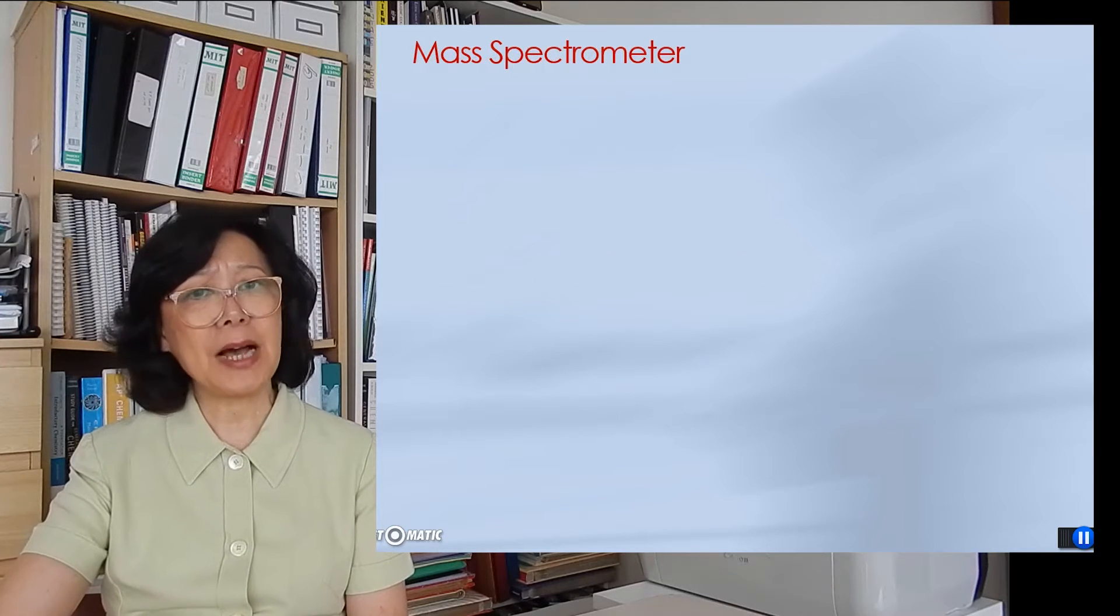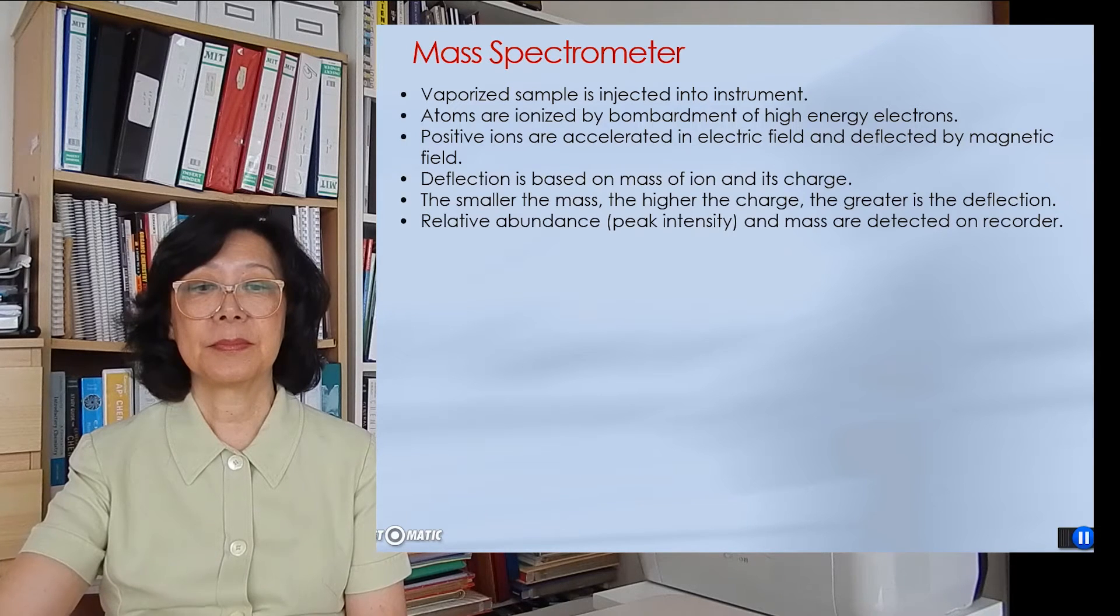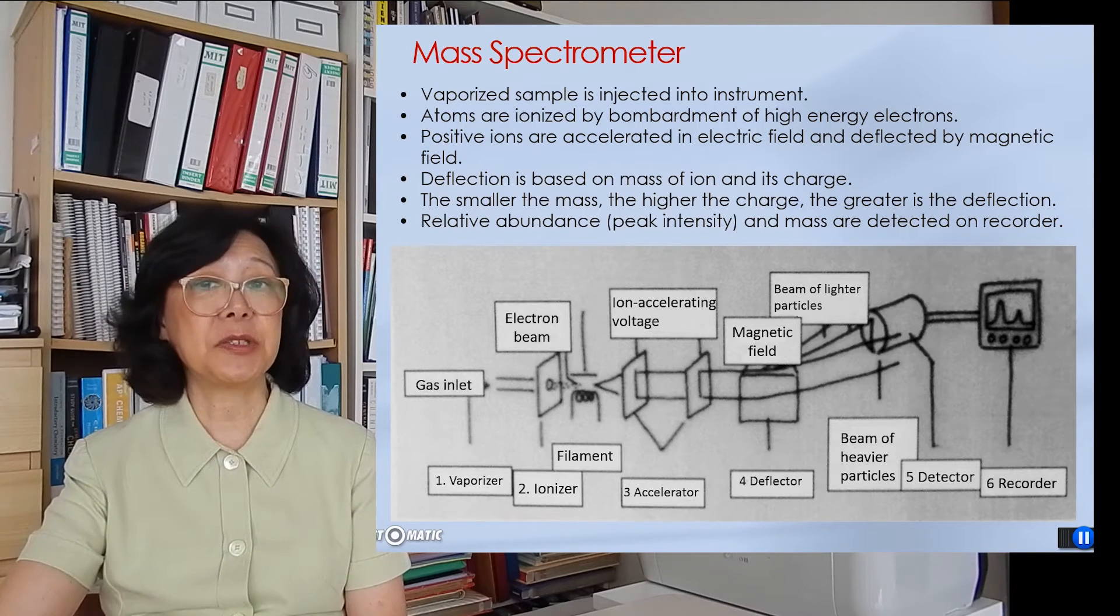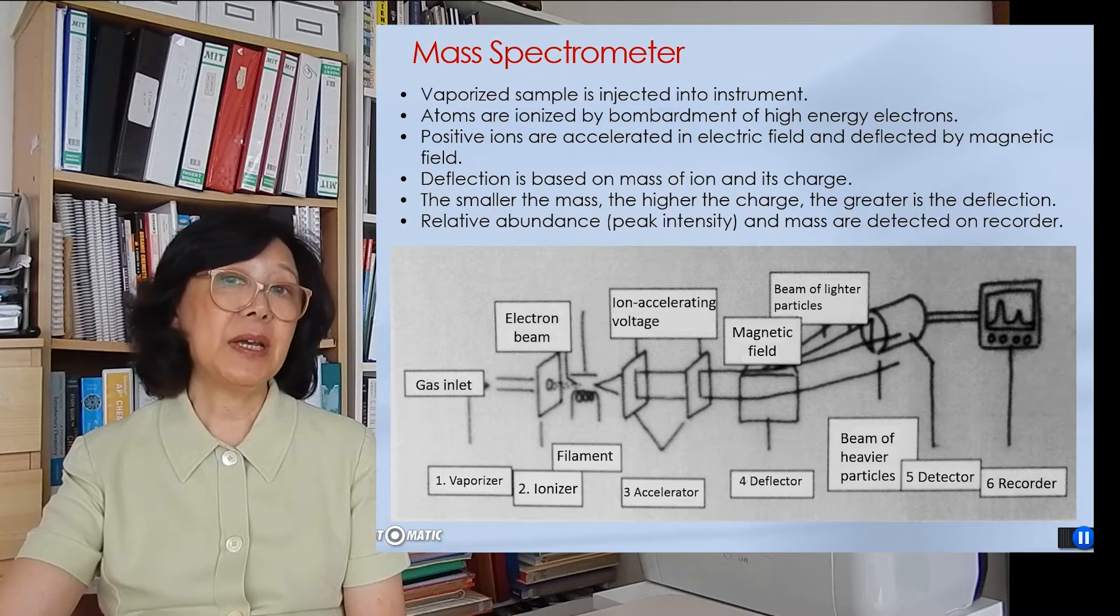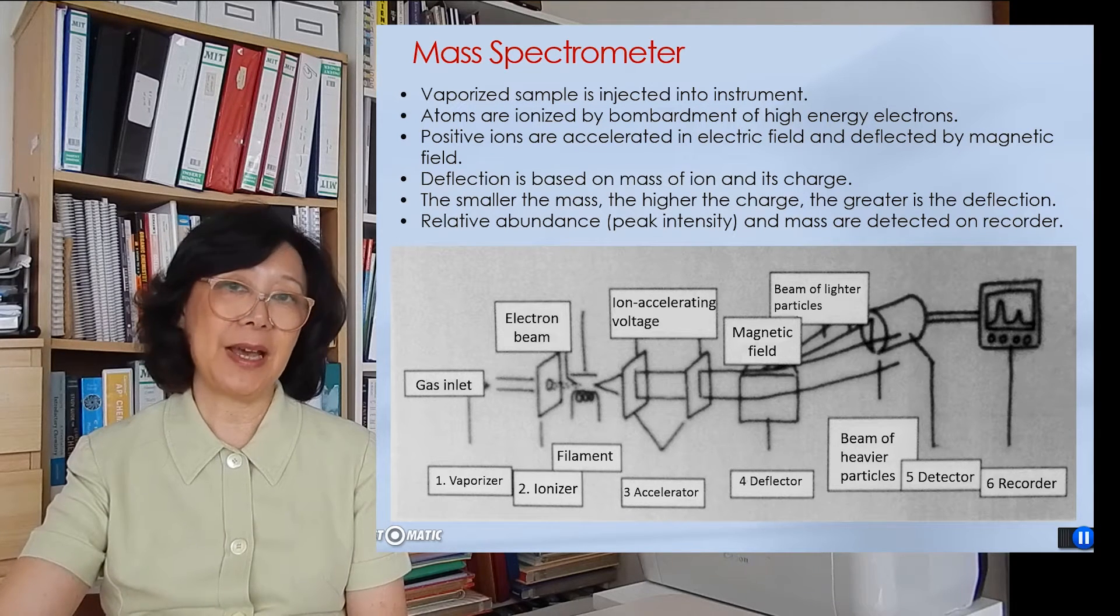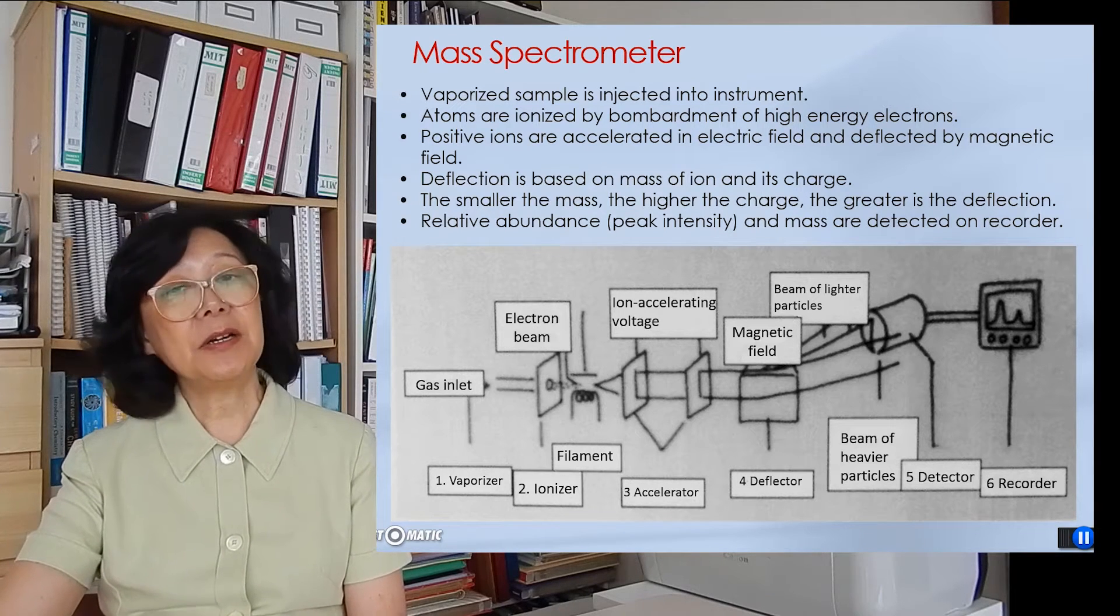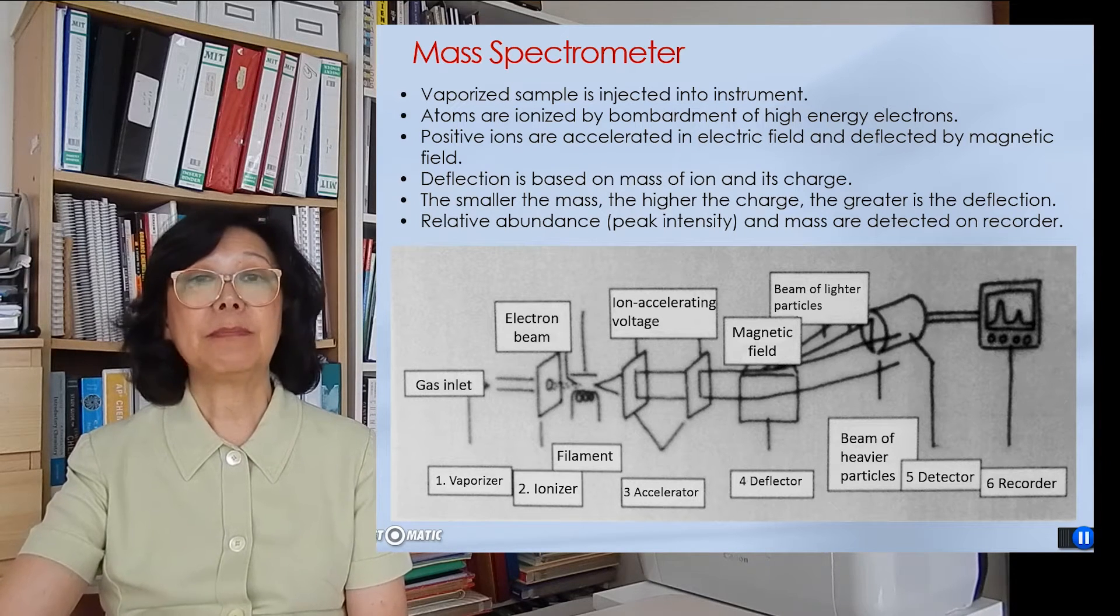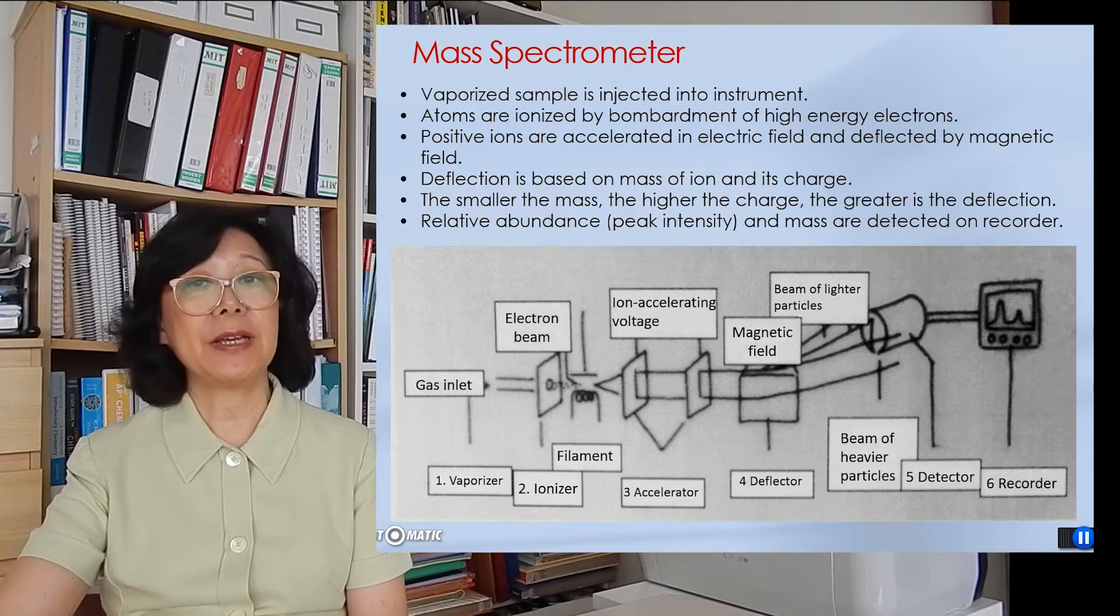So how does a mass spectrometer work? Here is a diagram that shows first the sample is vaporized into gas form and injected into the instrument. Then being bombarded with high energy electron beams that knock off the valence electrons from the atoms to turn them into positive ions. These ions are then accelerated through the electrical field and bent by the magnetic field. Now the bending depends on the mass and the charge of the ions.